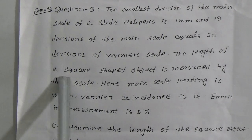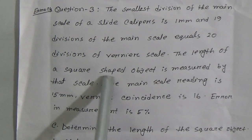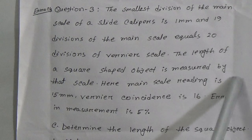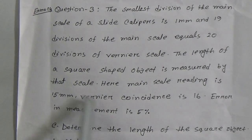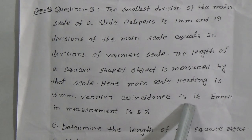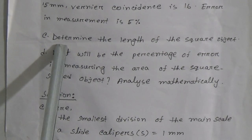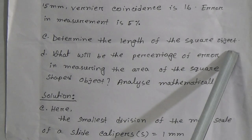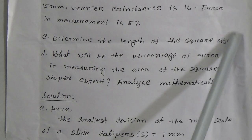Here, a square shaped object is measured by that scale. The main scale reading is 15 millimeter. Vernier coincidence is 16. Error in measurement is 5 percent. Question C: determine the length of the square object.